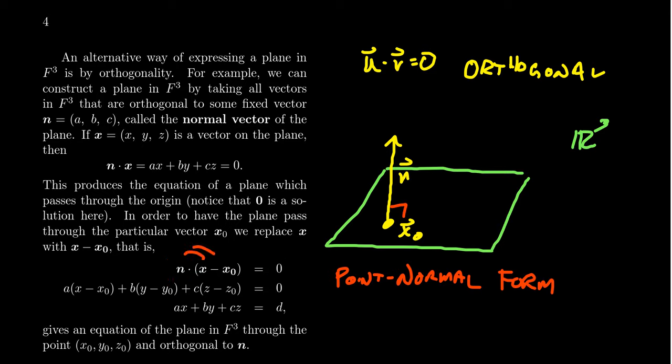If we expand this point-normal form out, by properties of the inner product you can distribute the n across the subtraction there. Given that this thing is x minus a particular value, it'll expand to be something like: a(x - x₀) + b(y - y₀) + c(z - z₀), where x₀, y₀, and z₀ are the coordinates of a specific point on the plane, x, y, and z are variables, and a, b, c are specific numbers, specific coefficients.